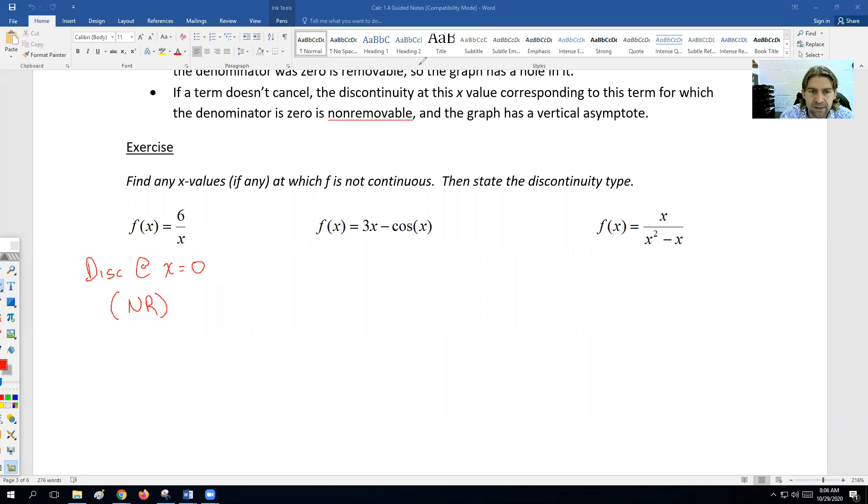Next problem here, we got 3x minus cosine x. If we just separate this, 3x does not have a denominator. Cosine doesn't have a denominator as well. So this function would never actually have a denominator, would never have a discontinuous point. So we would say that this function is continuous. There is no point where an x wouldn't be able to plug in.